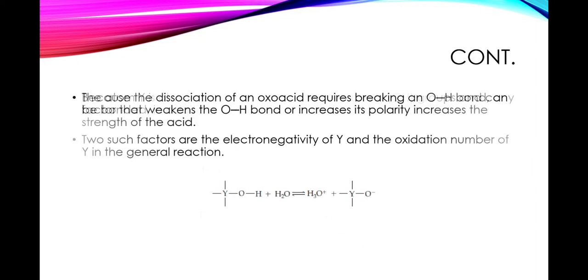Because the dissociation of an oxyacid requires breaking an O-H bond, any factor that weakens the O-H bond or increases its polarity increases the strength of the acid. Two such factors are electronegativity of Y and the oxidation number of Y.